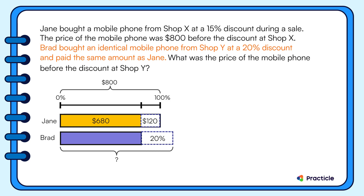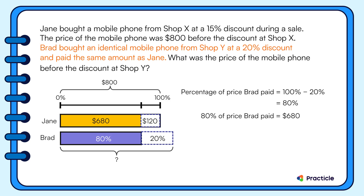Let's see — if Brad had a 20% discount from ShopY, this would mean that he paid 100% minus 20%, which is 80% of the original price at ShopY, right? Now that we know 80% of the original price is $680, we can find how much 100% of the original price is.